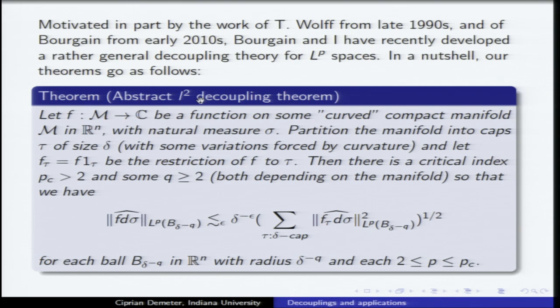The second piece of work was Jean's work from about 2011. That was a very surprising piece of mathematics. Jean proved a decoupling — an honest L2 decoupling inequality for hypersurfaces with positive definite second fundamental form in some range, the so-called Stein-Thomas range. That's essentially how we got started: we wanted to push the theory all the way up to the endpoint.